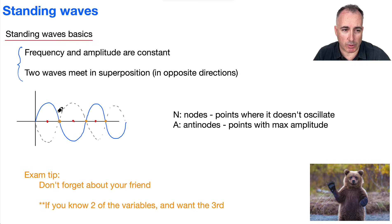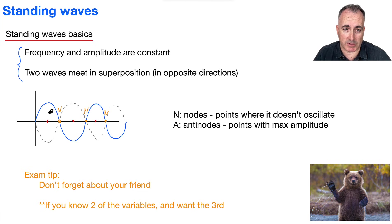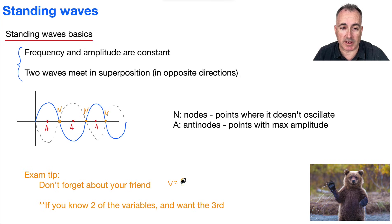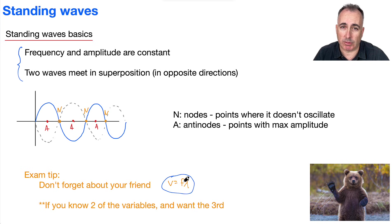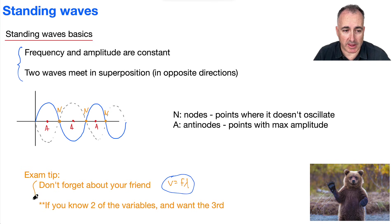If there's a point that doesn't move or doesn't oscillate, we call them nodes. And these points that have maximum oscillation — like if you're located right here and it goes up and down — that's called an anti-node. Don't forget about the wave equation: v = f·λ. Whenever you're doing calculations with standing waves, if you know two of the three variables you can always use this equation to find the third.